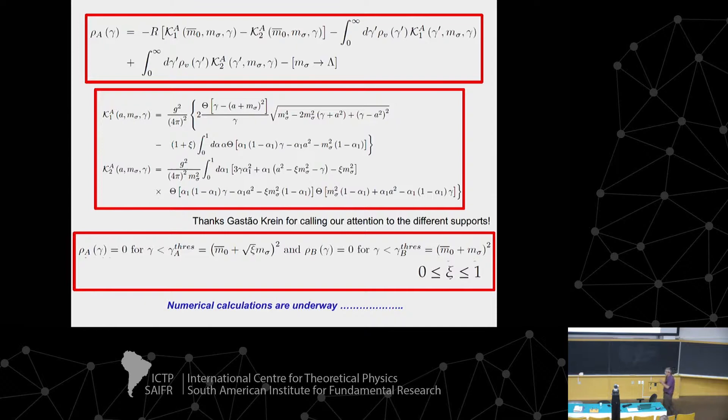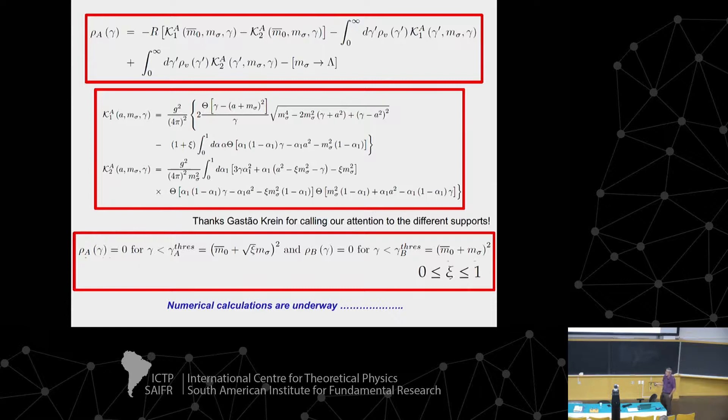Using the Feynman parameterization plus the uniqueness of the integral representation, we are able to write down this integral equation. We have the kernel, and we must take care of the support. This is the analytic form of the kernel. The m-sigma is just the mass of the exchanged vector particle.